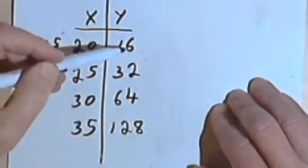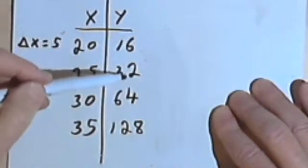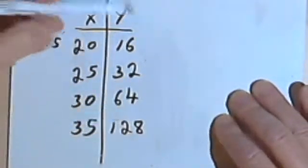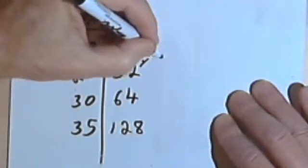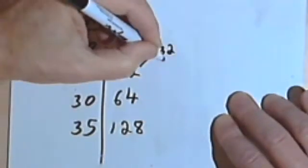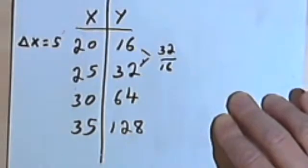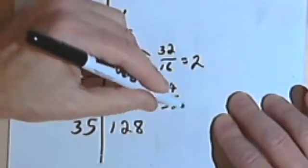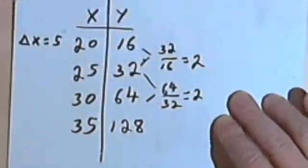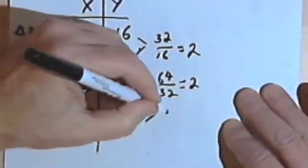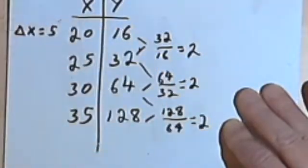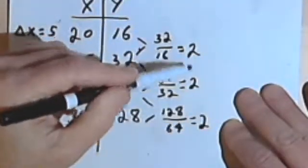Let's look at the numbers, 16, the y column, 16 to 32, 32 to 64. It looks like I'm doubling them. And we can check that to be sure. I'll see what the ratio is of 32 over 16, 32 over 16 is 2, 64 over 32 is 2. And 128 over 64 is 2. So my ratio is 2, my b is 2.